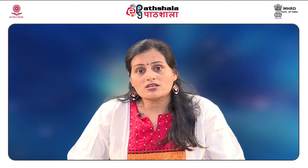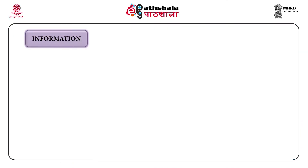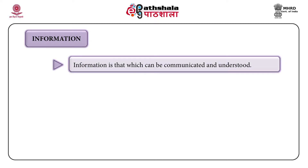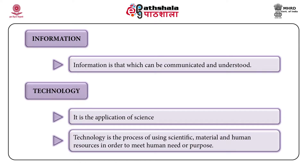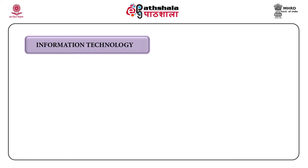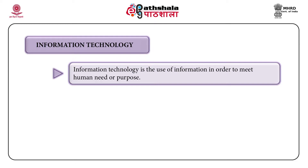Let us discuss the concept of information and communication technology in detail. First of all, we will see what is information. Information is that which is understood, communicated and processed. When we talk about technology, technology is the process of using material, scientific and human resources to meet our need or purpose. So, basically, information technology is nothing but making use of information to meet our human need or purpose. And when we integrate one more element — communication — it becomes information and communication technology.